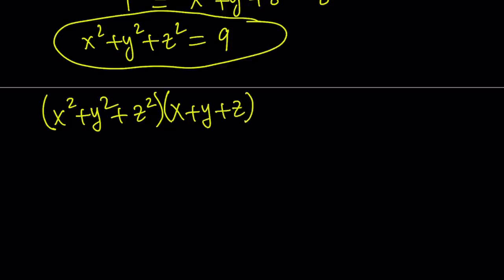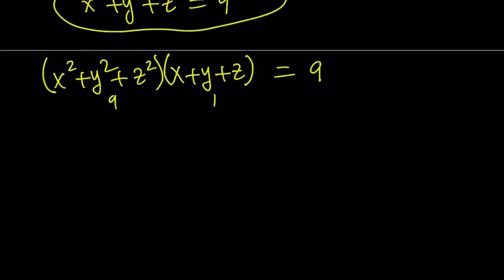And since we know that one of them is 9, this is 9 and this is 1, the product will equal 9. Now let's go ahead and distribute this, we're going to get 9 terms, but we can expand this completely and then I'll arrange the terms.